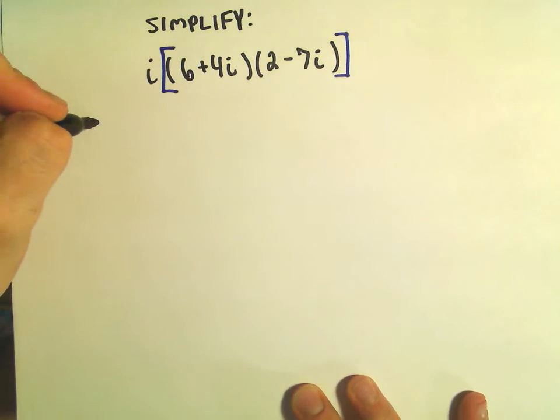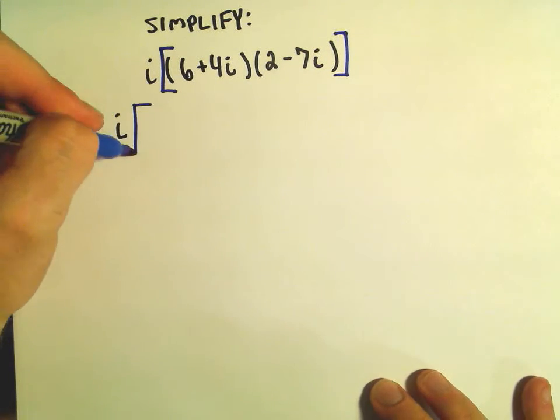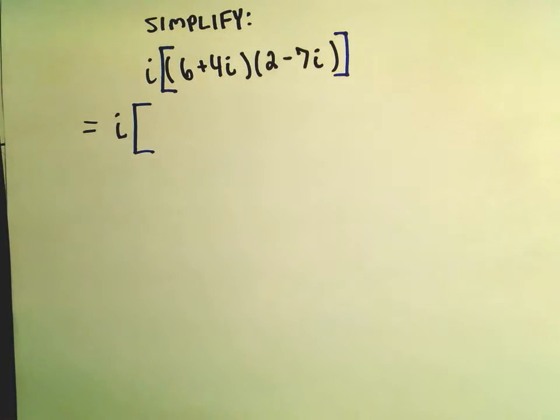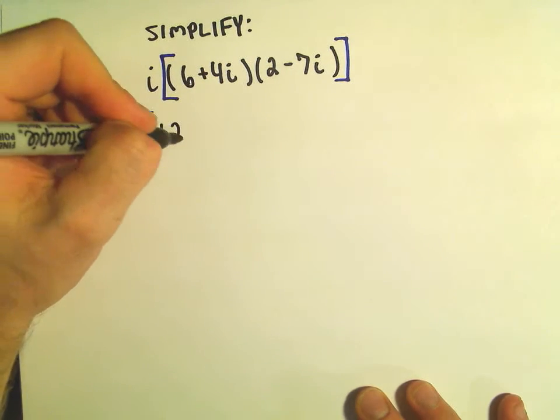Again, a couple different ways that you can simplify this stuff down for sure, but this is the way that I'm going to do it. So again, we still have to distribute as in the previous example, so 6 times 2 is going to give us 12.